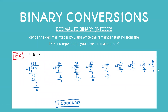Short and sweet: you keep dividing the decimal integer by two and write the remainder starting from the least significant bit, and repeat until you have a remainder of zero.